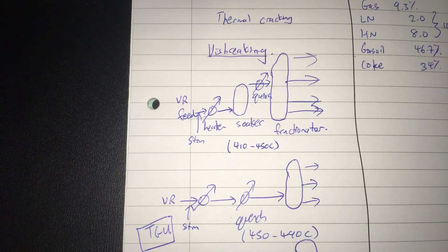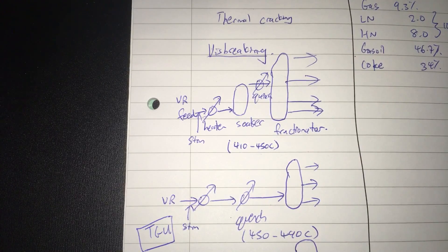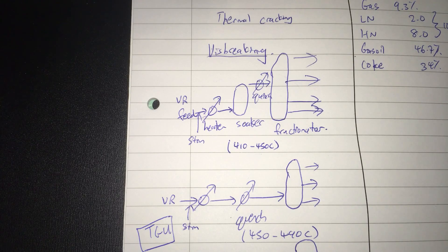Now, what if you really want to maximize your distillate yield? Distillate yields, meaning to say gas oil, kerosene, etc. Well, there is this process known as delayed coking. Why is it called delayed coking? I'll explain to you right now.